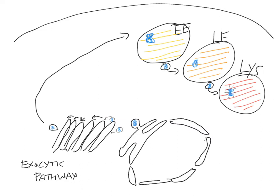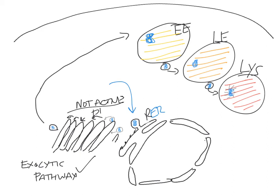Why do we care? Well, in the exocytic pathway, you are making enzymes. This blue squiggle is the enzyme — the acid hydrolase — and it starts being made on the ER. This is the rough ER. As it gets transported from the rough ER to the ERGIC to the Golgi and through the Golgi stacks, you don't want it to be active. So in these areas that particular enzyme is not active, because the pH is not low enough — the pH in these areas is approximately 7.